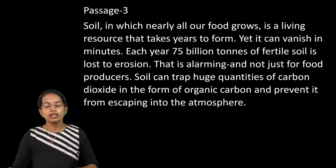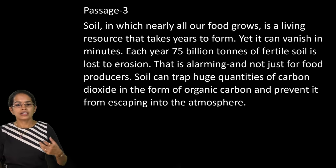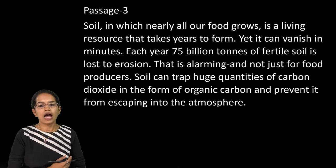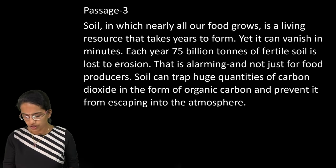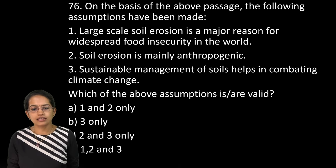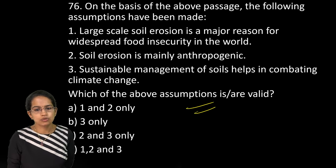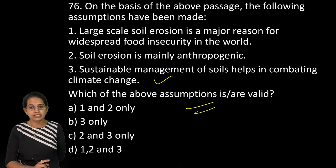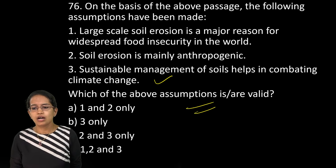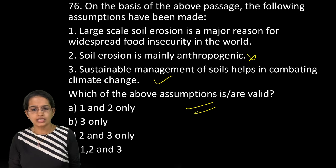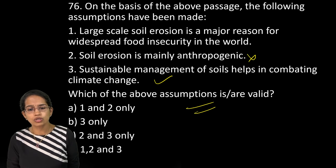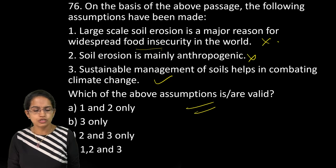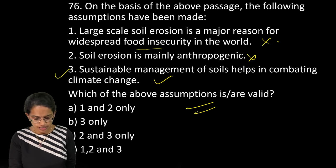The next is talking about soil. The concept of soil erosion. How it has been increasing over the years. And soil is basically is a place which could trap the carbon dioxide in the form of organic carbon. So what is assumed in the passage. So when we say assumed in the passage we can say sustainable management techniques help to combat climate change. That's correct. Soil erosion it does not give a reason that it's anthropogenic in nature. And large scale soil erosion is not the major thing which talks about food insecurity. So you have three only as the right option.